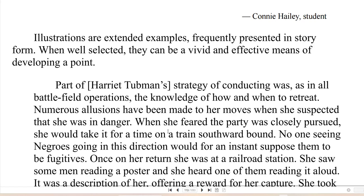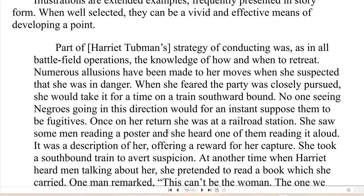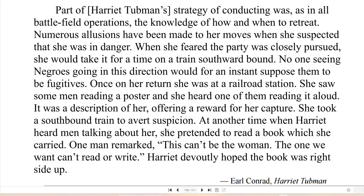So here you have illustration paragraphs that are like extended example paragraphs. Part of Harriet Tubman's strategy of conducting was, as in all battlefield operations, the knowledge of how and when to retreat. When she feared the party was closely pursued, she would take it for a time on a train southward bound — no one seeing Negroes going in this direction would suppose them to be fugitives. Once on her return, she was at a railroad station and saw some men reading a poster; she heard one of them reading aloud a description of her offering a reward for her capture. She took a southbound train to avert suspicion. At another time, when Harriet heard men talking about her, she pretended to read a book which she carried. One man remarked, 'This can't be the woman — the one we want can't read or write.' Harriet devoutly hoped the book was right side up. — Earl Conrad, Harriet Tubman.